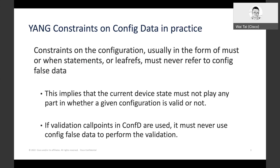So how is this done in practice? YANG constraints on the configuration, usually expressed in the form of must or when statements or leafrefs, must never refer to config false data. This implies that the current device state must not play any part in whether a given configuration is valid or not. If you happen to be using ConfD and its validation call points feature to perform validation at runtime, your custom validation code must never use config false data to perform the validation of the configuration within a NETCONF transaction.